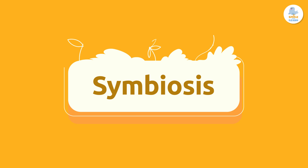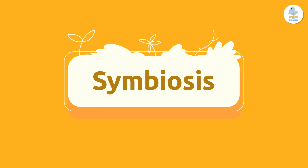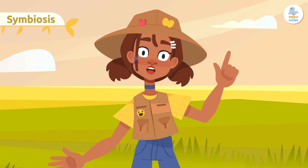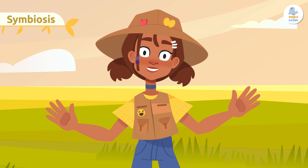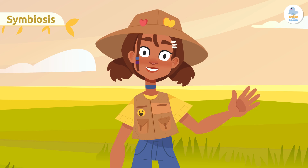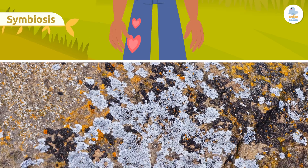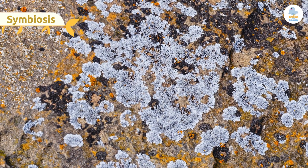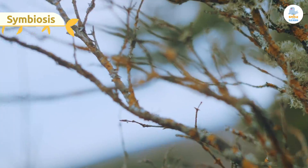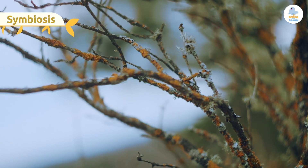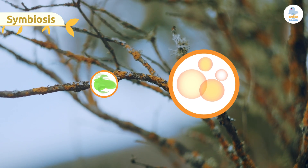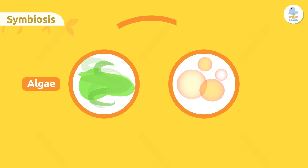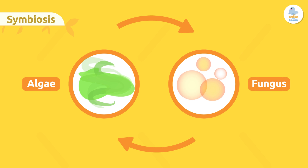Symbiosis. Symbiosis is a relationship between two organisms where both benefit, but neither could survive without the other. Take lichens for example — lichens may look like spots or tiny plants, but the truth is that they're the product of a symbiotic relationship between fungus and algae. The algae brings nutrients to the relationship, and the fungus provides a way to stick to the surface as well as protection. A perfect combination.